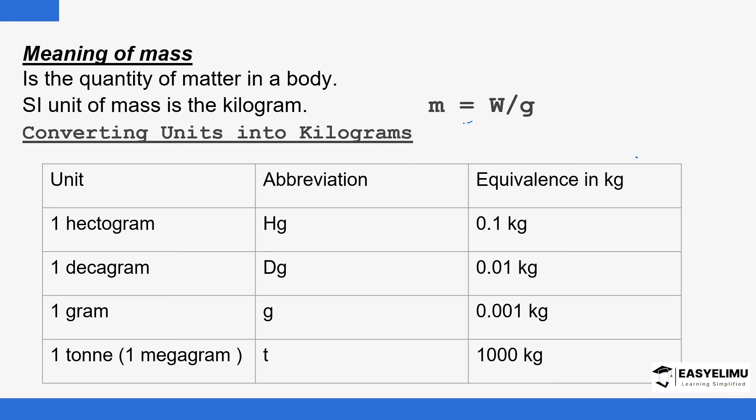The formula that can be used to calculate mass: mass equals weight divided by gravity.